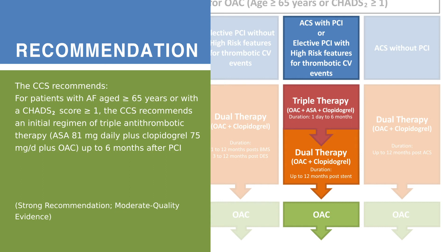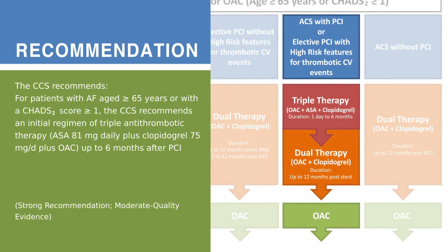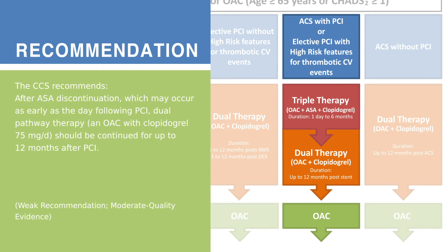For patients with AF aged 65 years or older with a CHADS2 score of 1 or higher who either have an acute coronary syndrome with PCI or are scheduled for elective PCI with high-risk features for thrombotic CV events, the CCS recommends an initial regimen of triple antithrombotic therapy consisting of ASA 81 mg daily plus clopidogrel 75 mg daily plus an OAC for up to six months following PCI. After ASA discontinuation, which may occur as early as the day following PCI, the CCS suggests that dual pathway therapy consisting of OAC plus clopidogrel 75 mg daily be continued for up to 12 months after PCI.